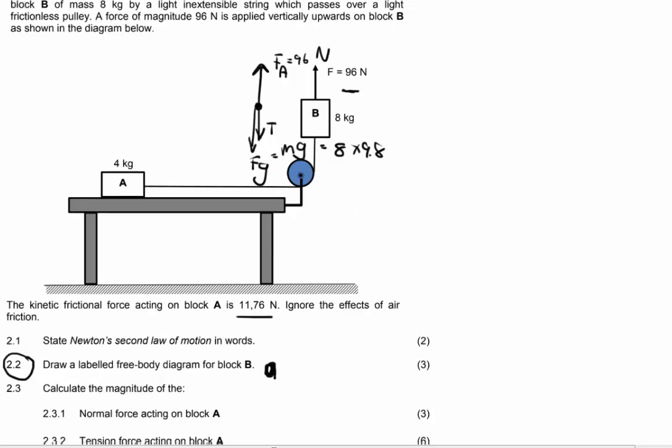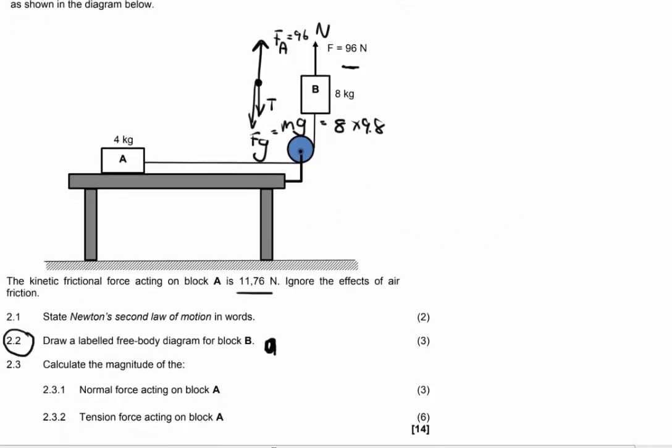Then if we move on to the next question, 2.3.1, calculate the magnitude of the normal force acting on block A. So what I like to do is I just like to draw the free body diagram so I know the forces acting on an object even though it wasn't asked. There's my dot for A. Upwards I have my normal force and downwards my force of gravity. I will have a force applied or tension force to the right and to the left a force of friction.